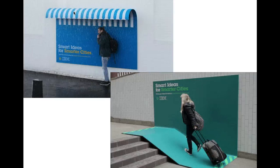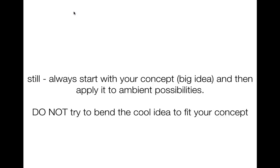Here's one I think is great because instead of disrupting people like the Truth campaign, it's actually helping people. IBM's 'Smart Ideas for Smarter Cities' platform used ambient advertising by solving basic primal needs — shelter from rain, or a ramp to get up stairs. These little conveniences remind people that IBM is a really smart company and that you should use them. Always start with your big idea and then apply it to ambient possibilities — don't try to fit a good idea to your concept after the fact.